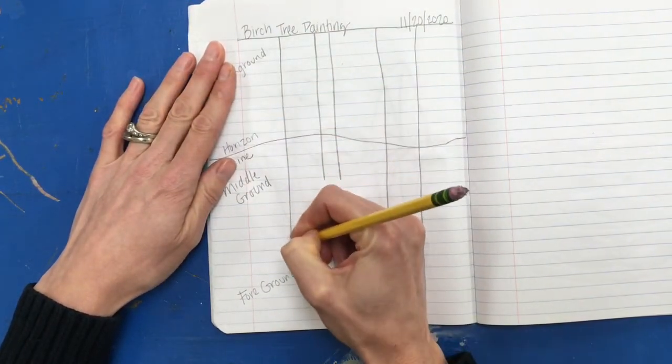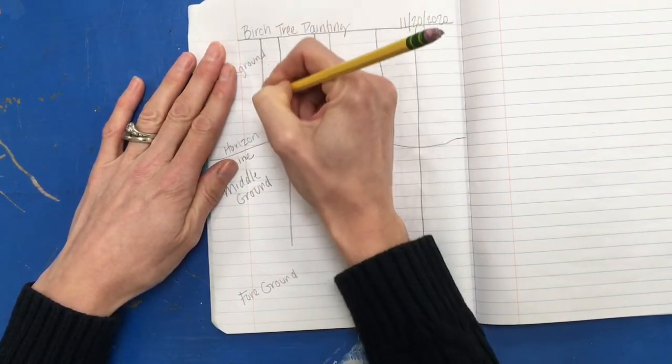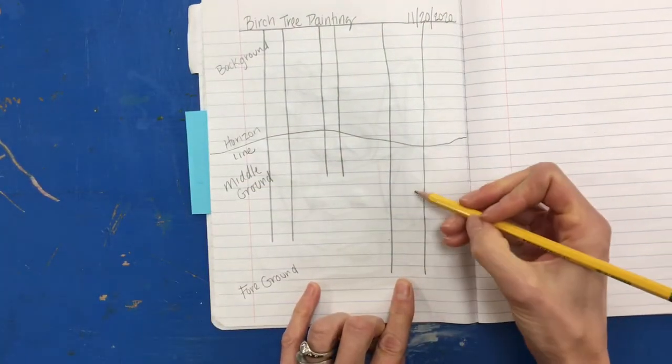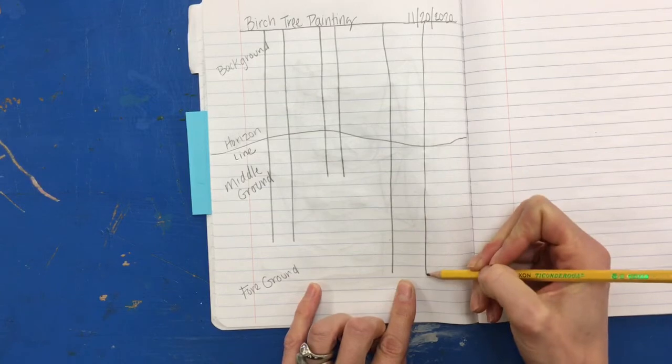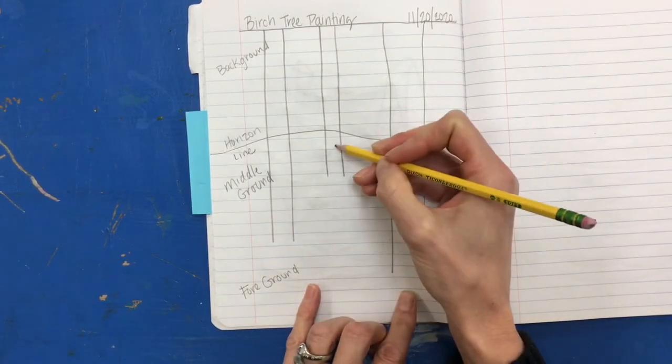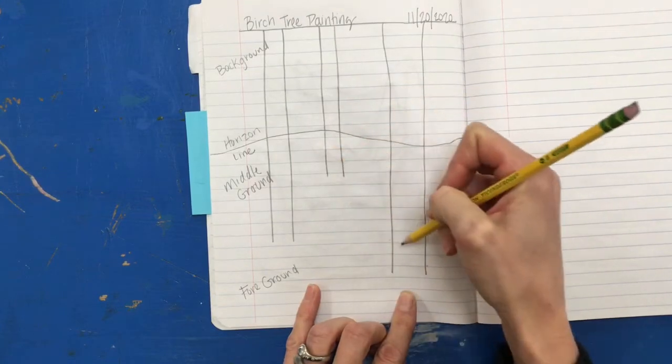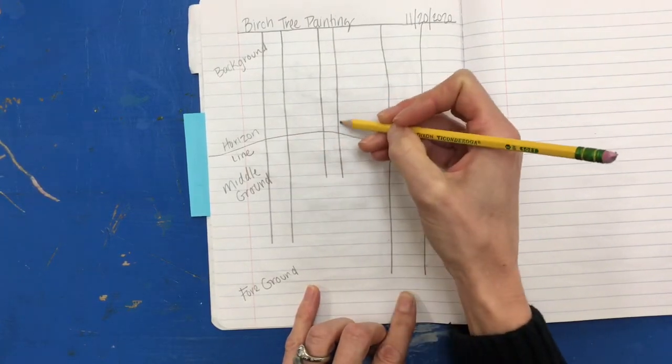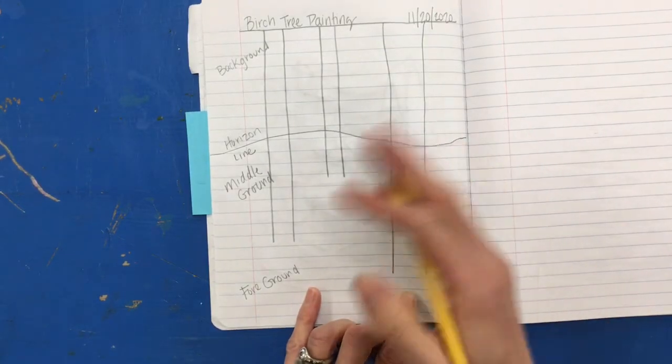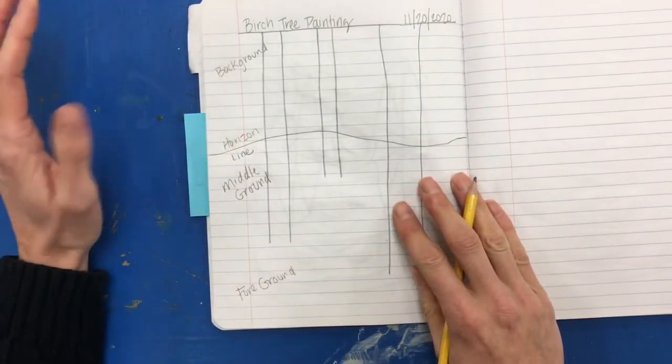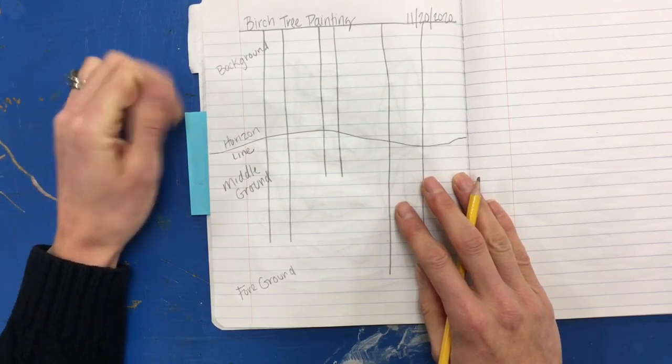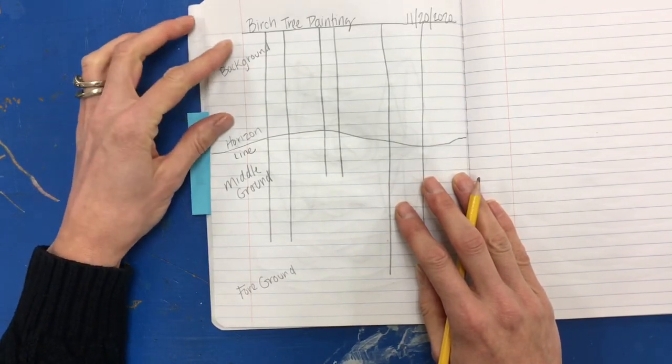So you can see that my tree closest to the viewer comes down farther in the paper, it is wider, and then they get narrower as we move from the foreground further back towards the background of our painting. So now my planning is done. I will need this picture later to practice the textures on my trees. So the next step will be painting our background.